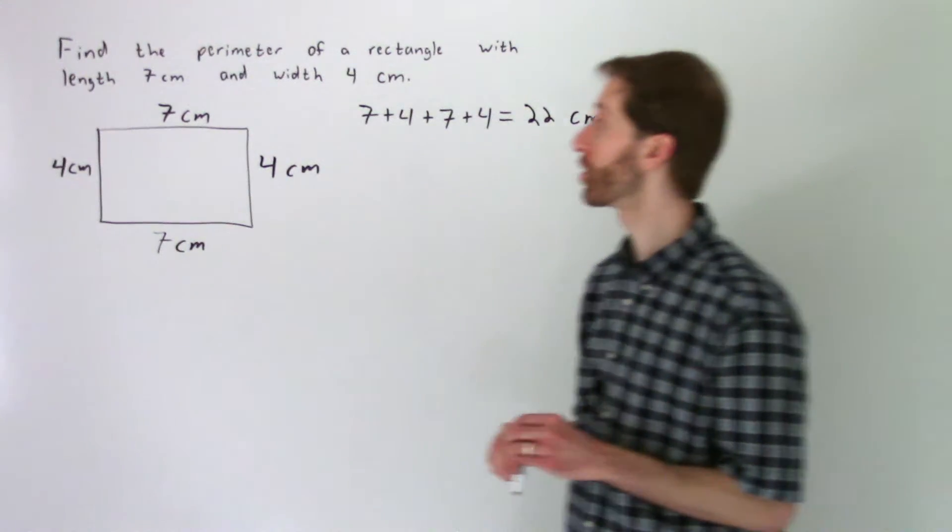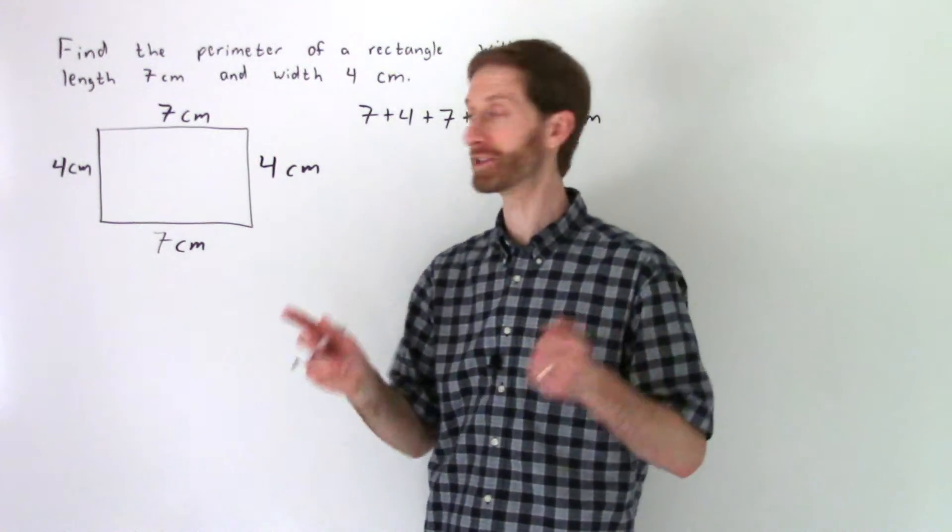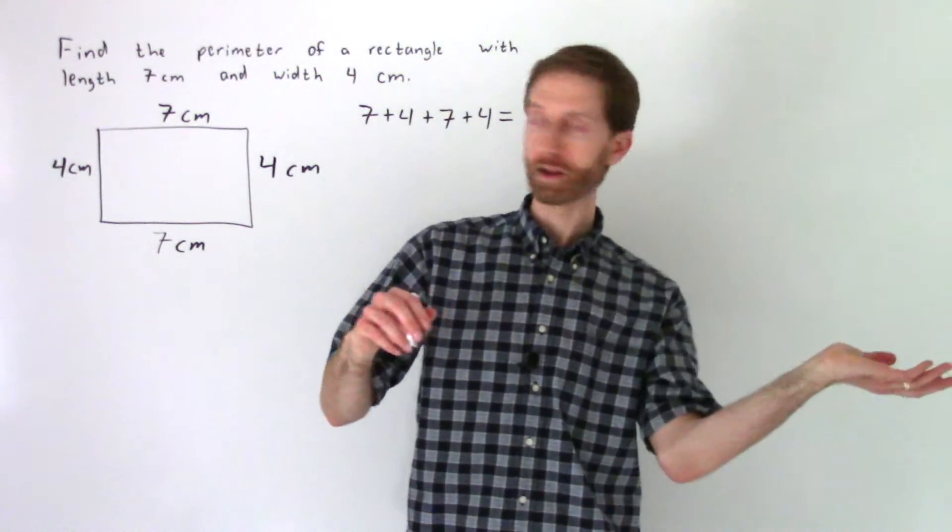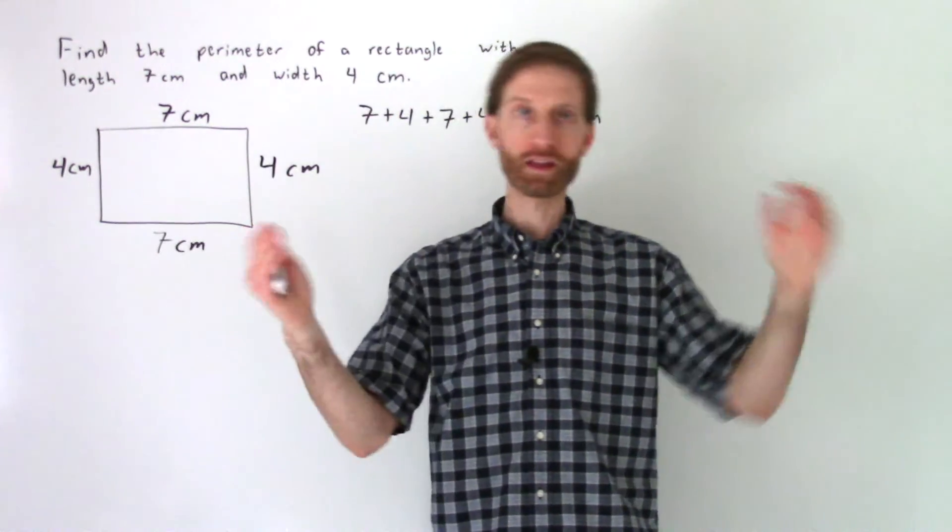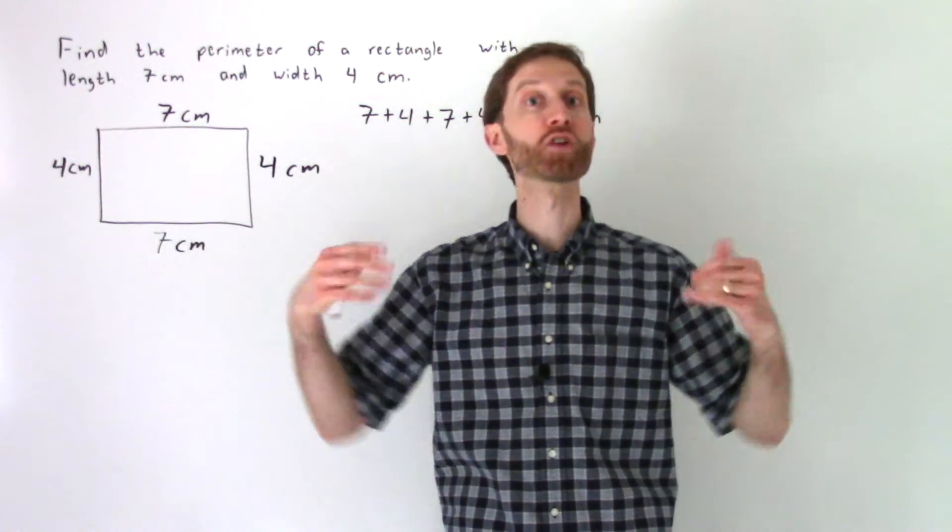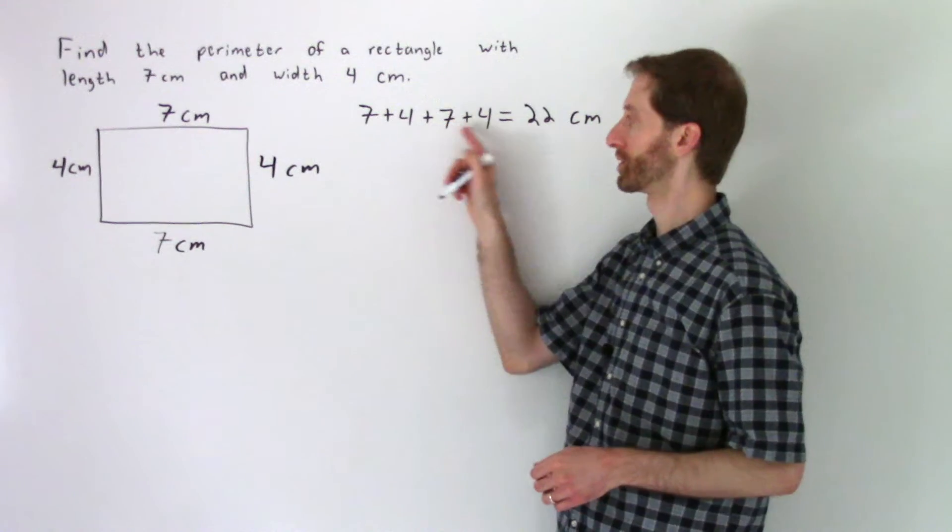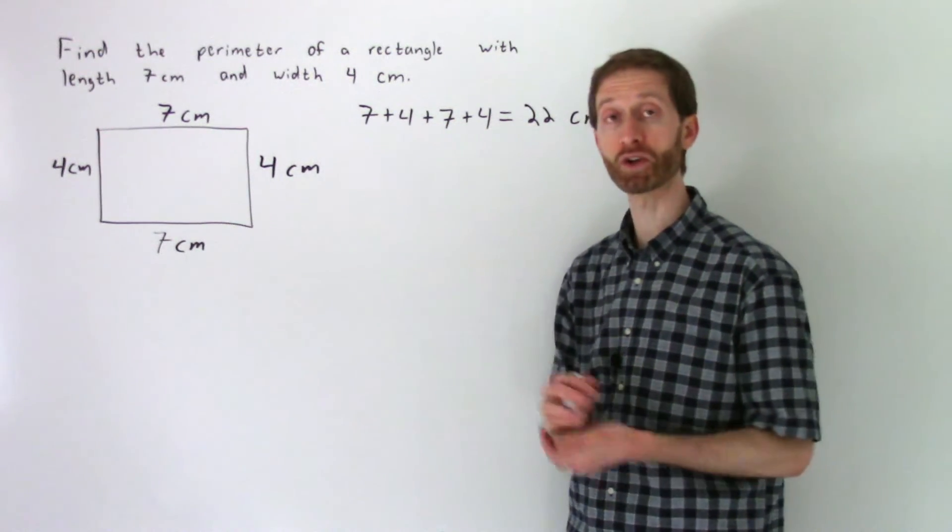You can also imagine almost unfolding this rectangle into sides, kind of striking this out and having the 4 fall, and then that 7 fall with it, and then the 4 fall with it. So you have like one straight line, like you've unwrapped the rectangle, and you'd have one straight line that is 7 plus 4 plus 7 plus 4 long. Pretty cool.